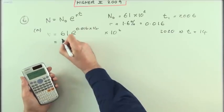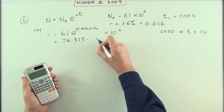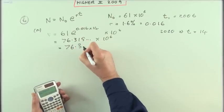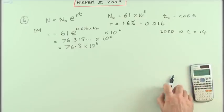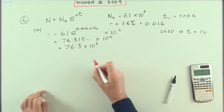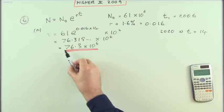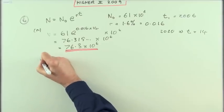And you get 76, 76.315 etc. times 10 to the 6. So 76.3 times 10 to the 6 would be the answer. You could write a million instead of 10 to the 6, if you so wished. It didn't specify an accuracy for the numerical part of it. So part A was straightforward enough.